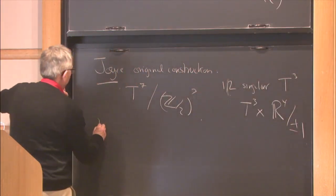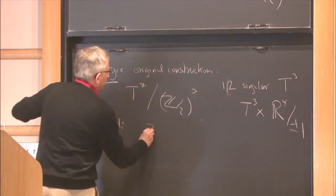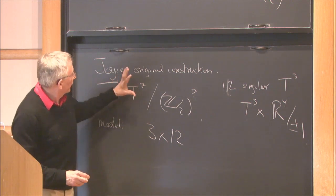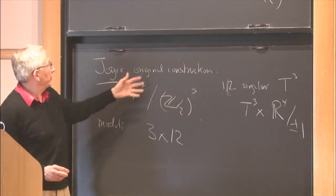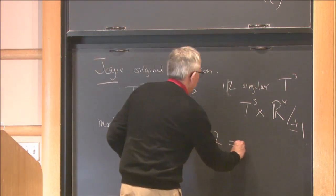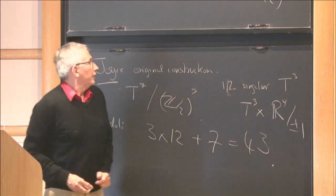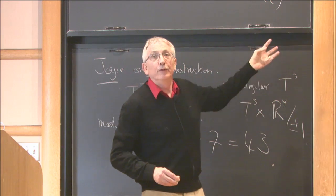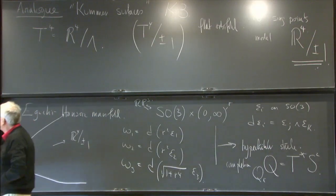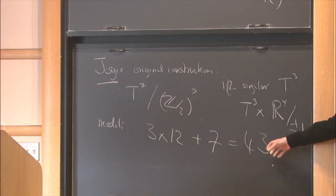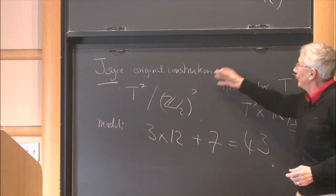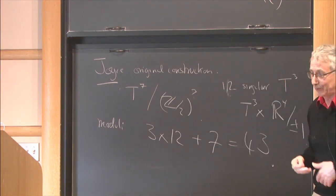Similarly for the G2 case: the local moduli parameters are 3×12 (three gluing parameters for each of the 12 singular subsets), and for the particular action the torus parameters give 7, yielding 36 + 7 = 43. So the manifold constructed has third Betti number 43. According to our general theory, the moduli space has that dimension, and the geometric interpretation of the parameters is as given. Joyce wrote down hundreds of similar examples with various interesting features.